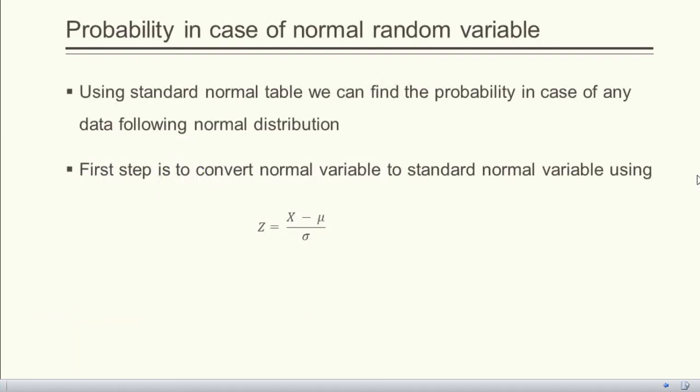The question is: how can we find the probability of a normal random variable, not a standard normal random variable? If normal random variables are given, the first step is to convert the normal random variable to a standard normal random variable using the formula z = (x − μ) / σ — that is, subtract the mean and divide by the standard deviation.